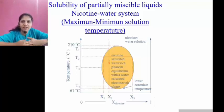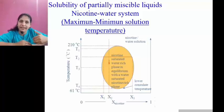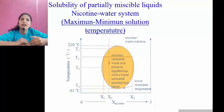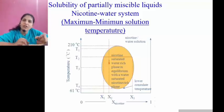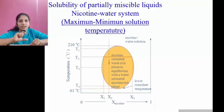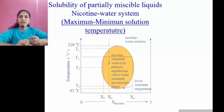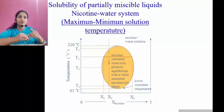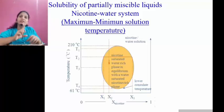Below 61 degrees centigrade the first layer is nicotine in water and the second layer is water in nicotine. Above 210 degrees centigrade, all compositions of nicotine in water or water in nicotine also form different layers. So between the temperature range of 61 degrees centigrade to 210 degrees centigrade, the nicotine-water system is homogeneous.